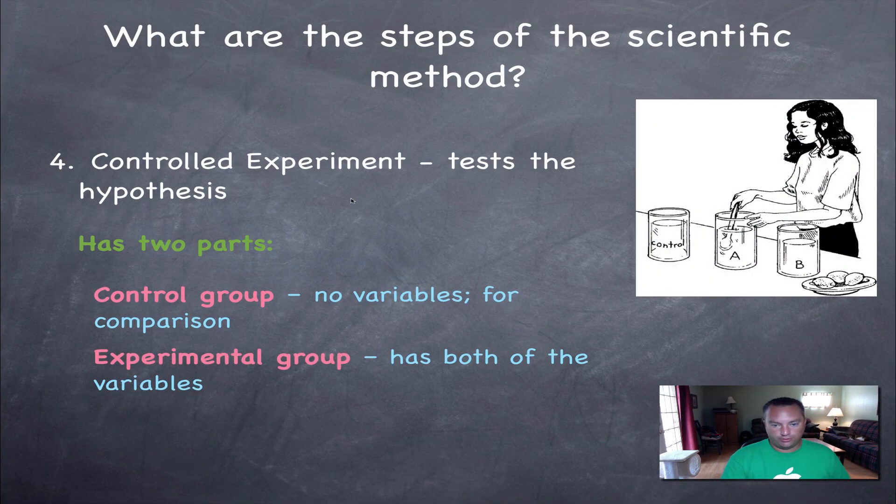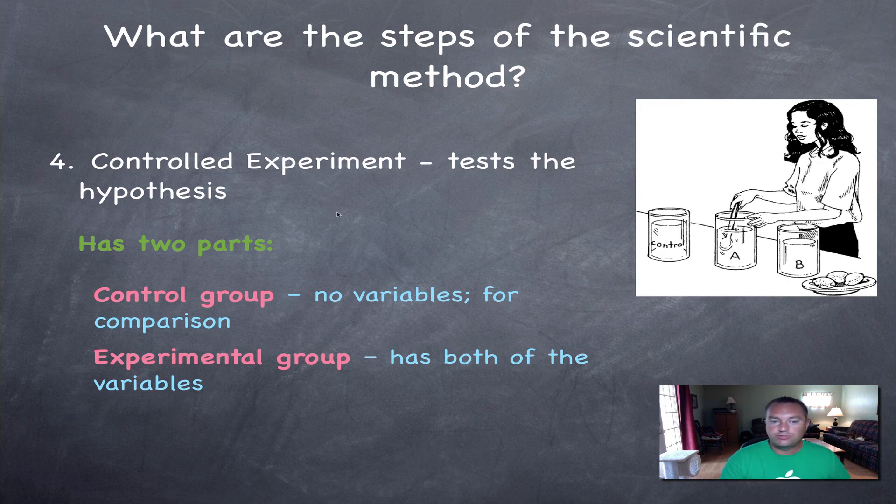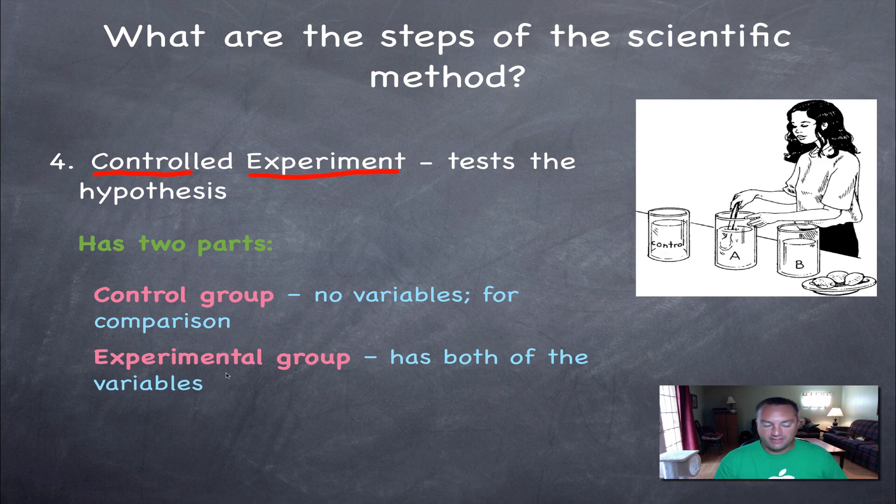What is a controlled experiment? This is what is used to test the hypothesis. Now in a controlled experiment, there's going to be two groups. In a controlled experiment, you have the control group and then you're going to have the experimental group. Very easy to remember. Now the control group doesn't have any variables. It's used for comparison. The experimental group, and this is where the stuff is happening. This is where you put in the variables.